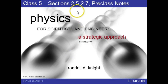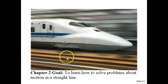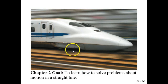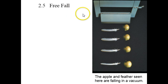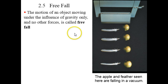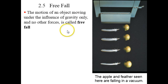Continuing with chapter 2, last three sections. Remember the goal of chapter 2 is to learn how to solve problems in one dimension. Vertical motion, which is only under the influence of gravity, is called free fall.